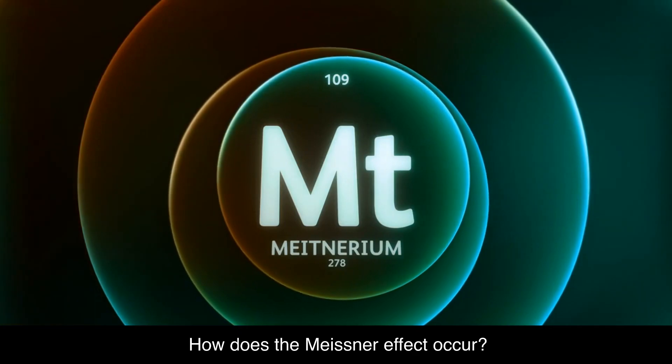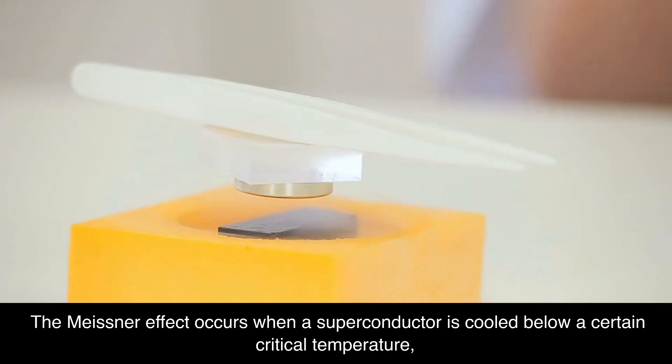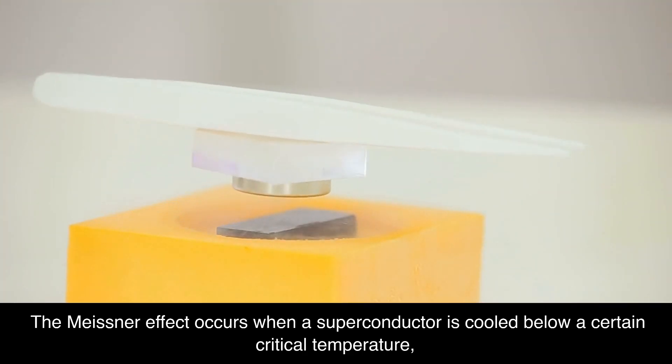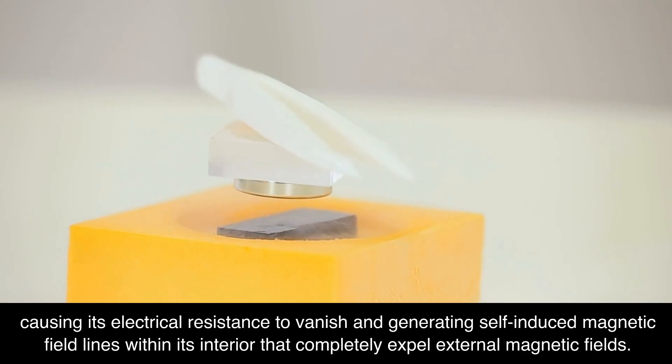How does the Meissner effect occur? The Meissner effect occurs when a superconductor is cooled below a certain critical temperature, causing its electrical resistance to vanish and generating self-induced magnetic field lines within its interior that completely expel external magnetic fields.